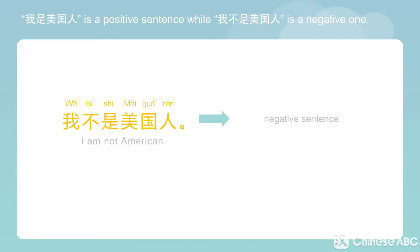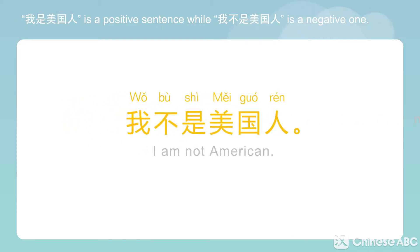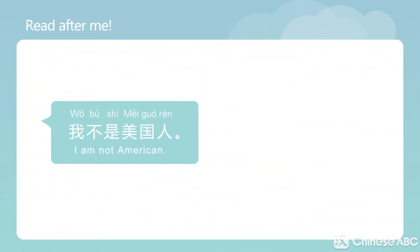How to make a negative sentence? In this sentence, put 不 before 是. Now follow me in reading: 我不是美国人 — I am not American.